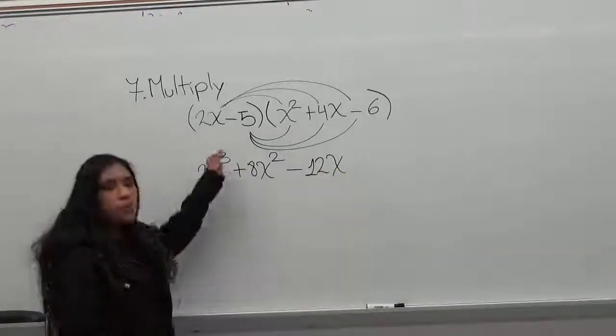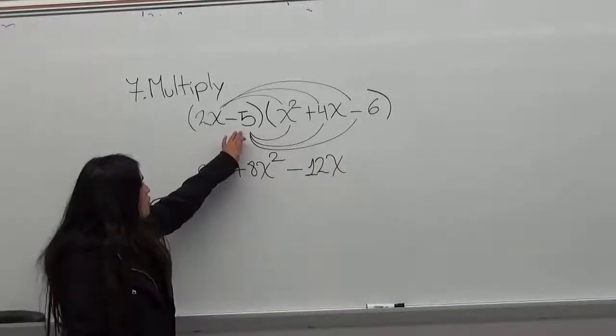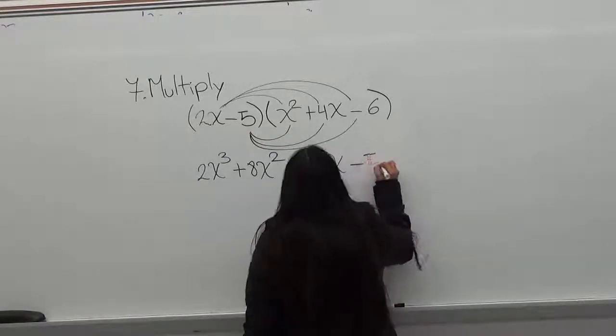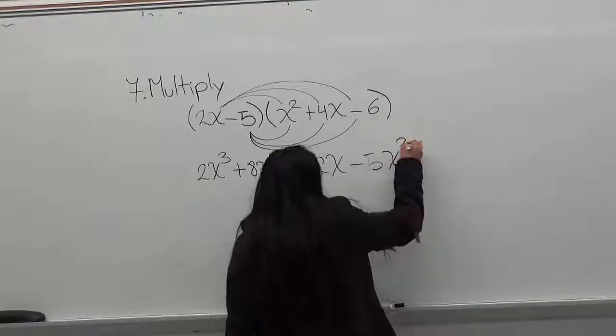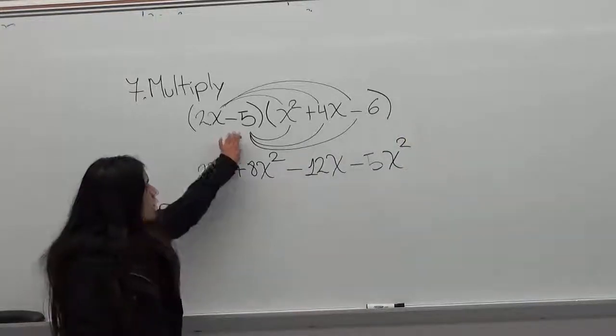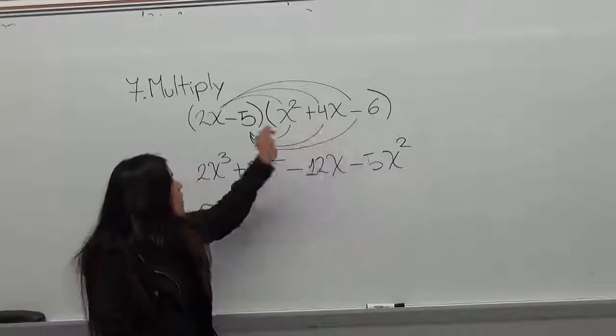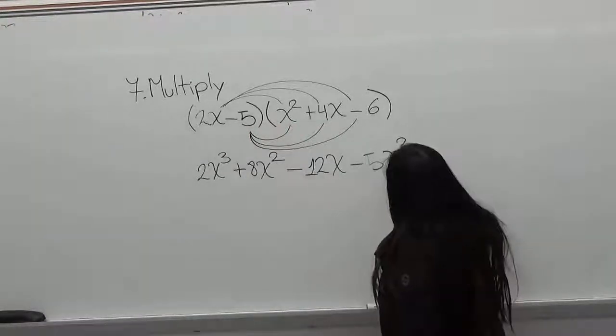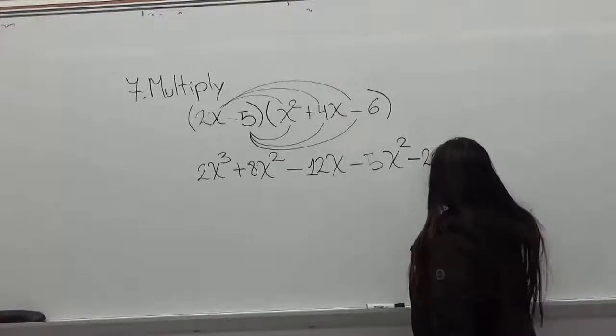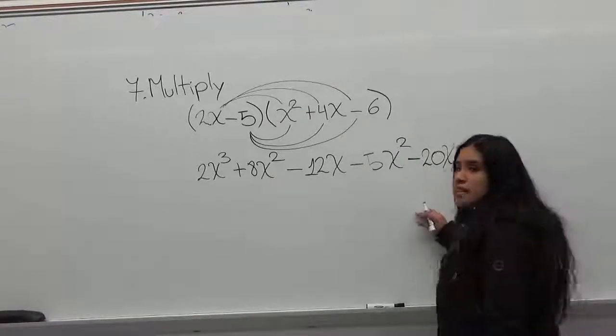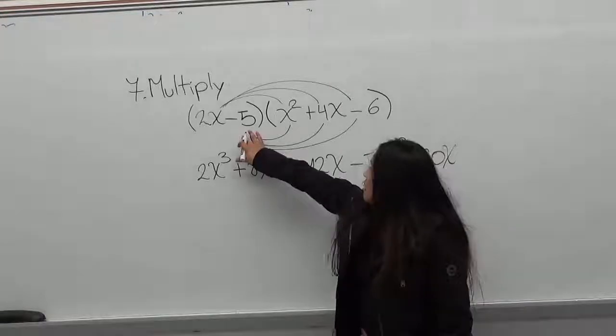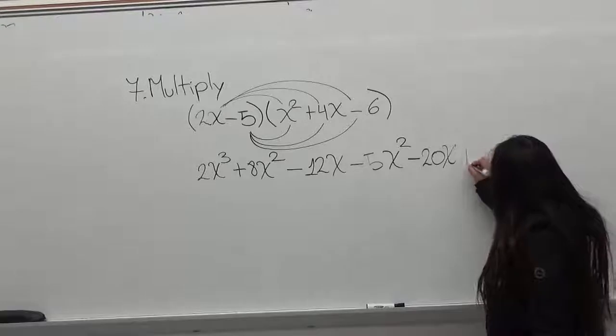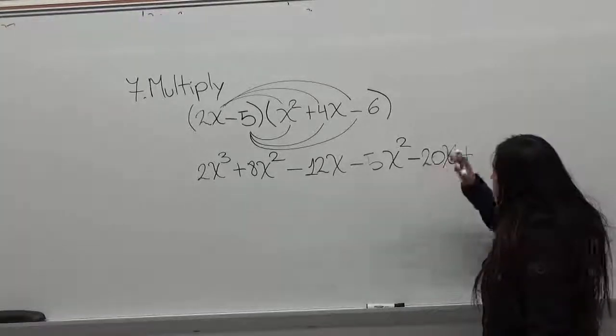So for the second one you have to do minus 5 times x squared, that is minus 5x squared. Then minus 5 times plus 4x. Minus times plus gives a minus, so you have minus 20x. And then you have minus 5 times minus 6. Negative times negative gives a plus, and 5 times 6 is 30.